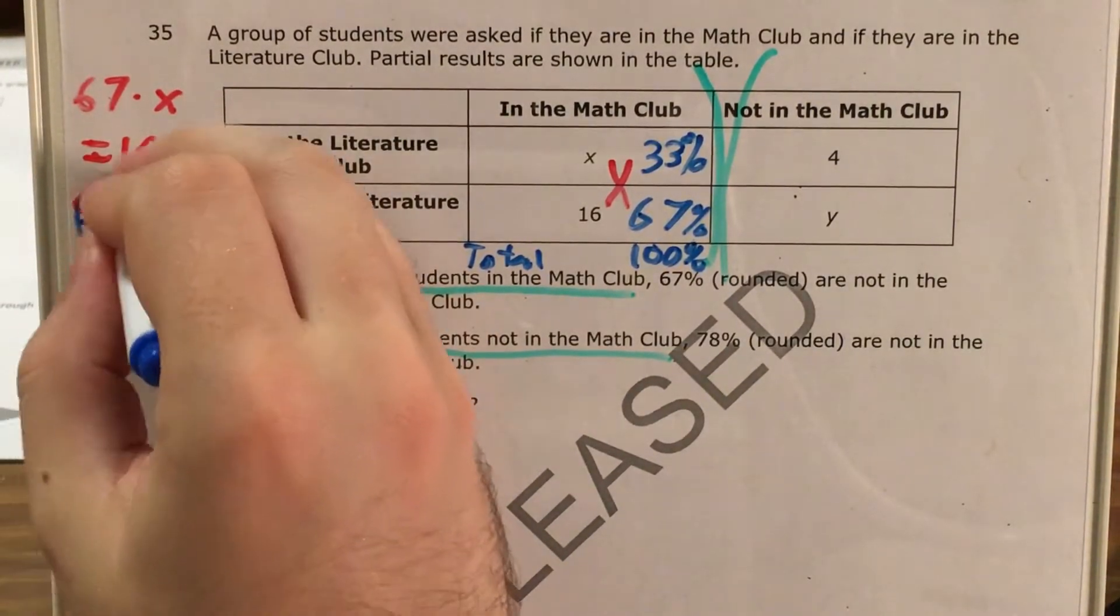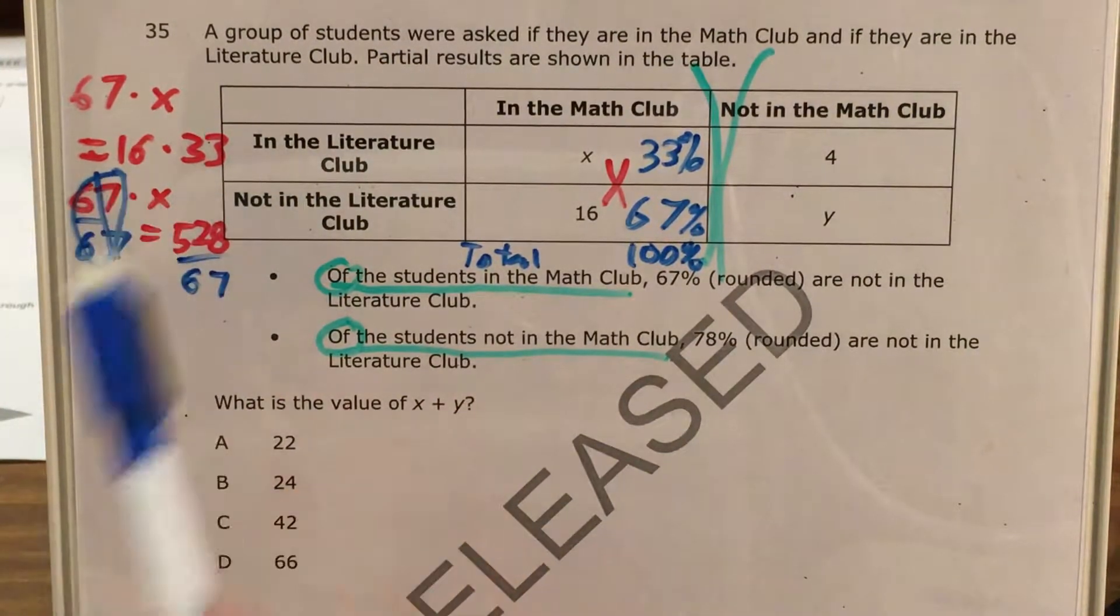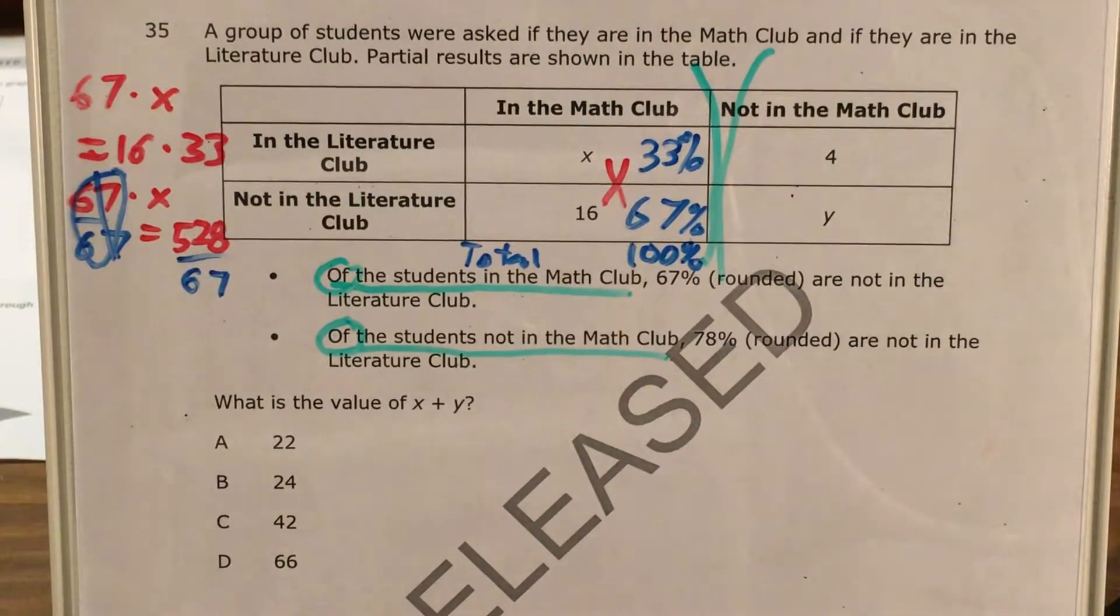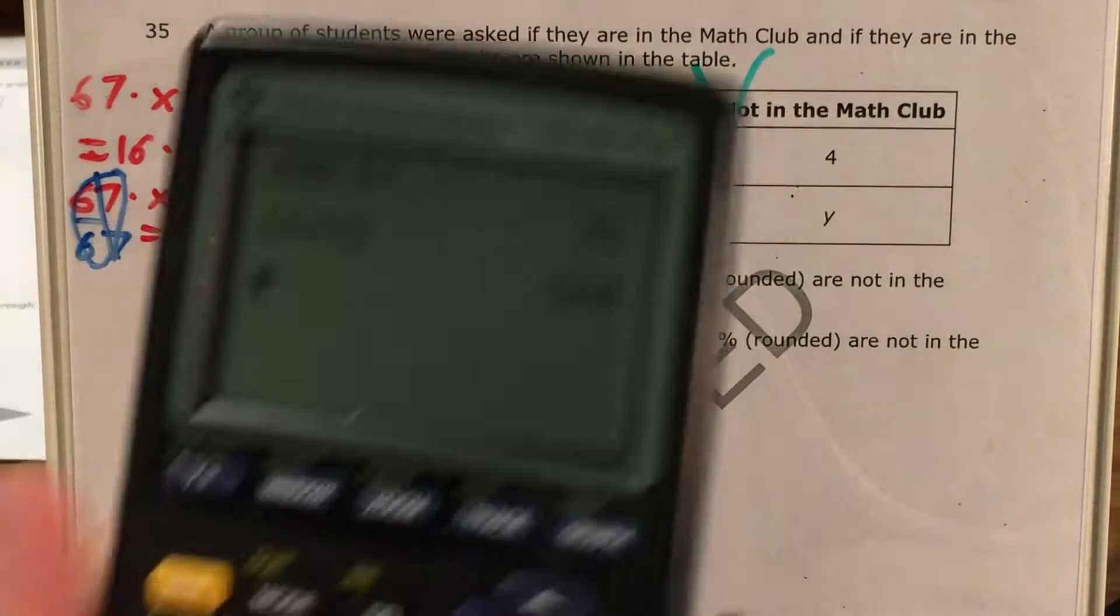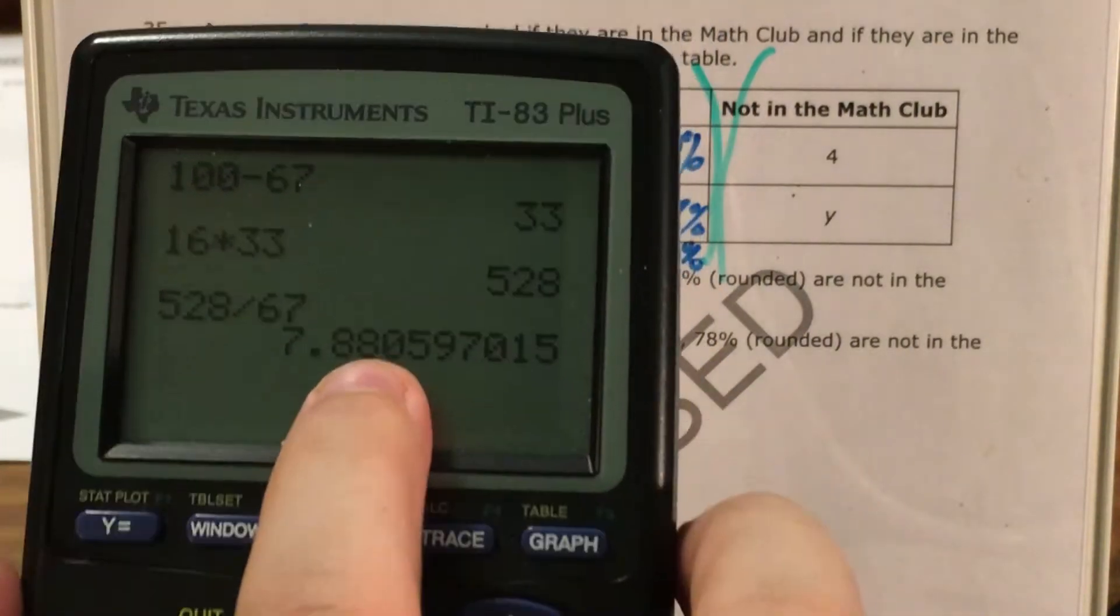Or I can use properties of equations and do 67 divided by 67 to cancel all of that out, because dividing is the opposite of multiplying. That's why either the fact family trick or the opposites in an equation trick works. So I just need to figure out 528 divided by 67, and it gets me this.